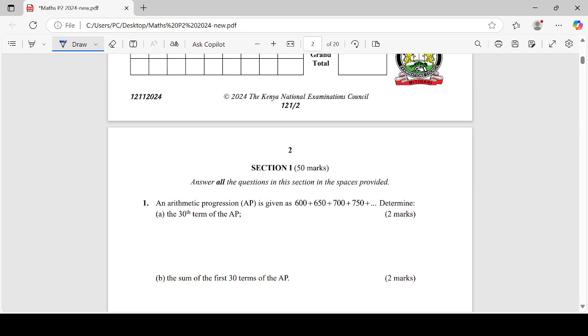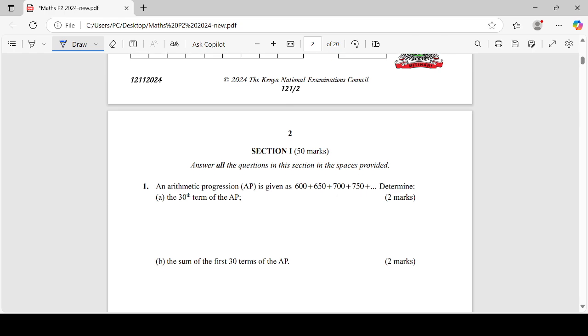Now let's go to question number one. An AP is given as 600 plus 650 plus 700 plus 750. Determine part A of the equation, the 30th term of an AP. This is a question on AP and I hope you remember to get the nth term.